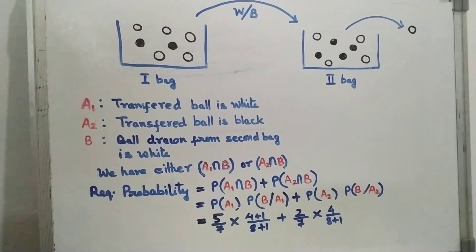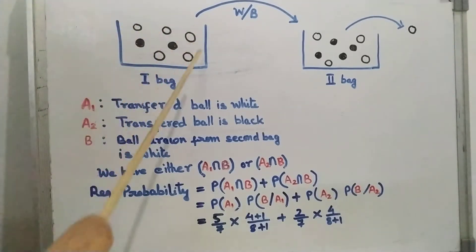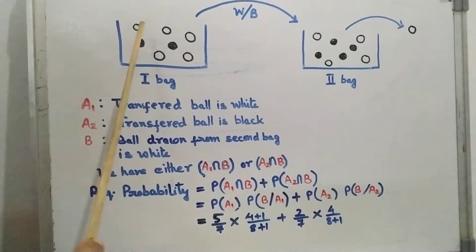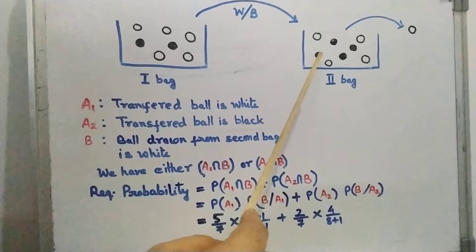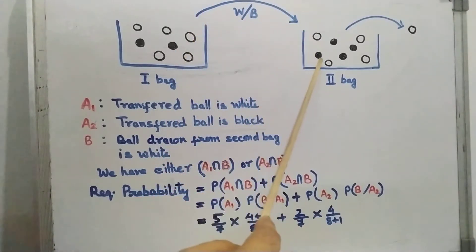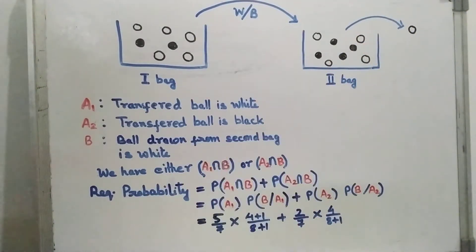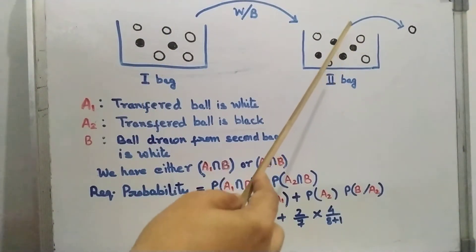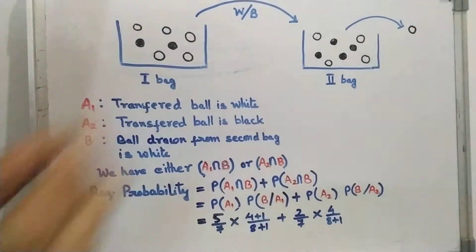Let us do one probability problem based on conditional probability. There are two bags. The first bag contains five white and two black balls, and the second bag contains four black and four white balls. One ball is transferred from bag one to bag two — it may be black or white. Then a ball is drawn from the second bag. What is the probability that the ball drawn from the second bag is white?